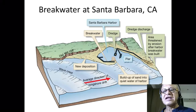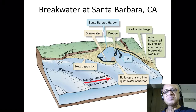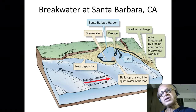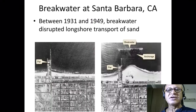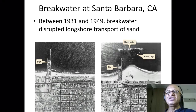Here is the breakwater of Santa Barbara, where sand was accumulating and flowing into the harbor. They built a pier and a dredge to take out sand and dump it on the other side, because the natural longshore drift was being disrupted by this breakwater. Over time the natural system stopped functioning as intended, so they built a pumping system — just like in Santa Cruz — to manage the sand.